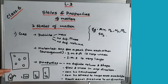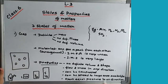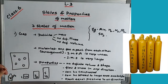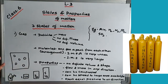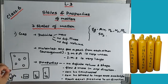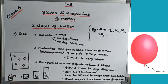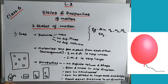Gas can spread to any large area available — however much area you provide, it will always occupy it. The only effect is that the concentration or smell becomes very less when a large area is provided. Gas exerts equal pressure in all directions — when you blow a balloon, it inflates uniformly everywhere because the air exerts equal pressure in all directions.